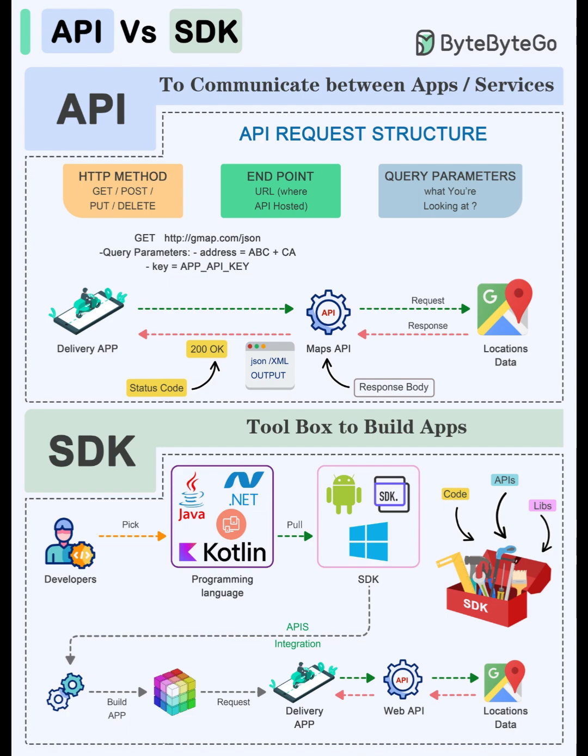Maps use case: with the API, send GET /geocode?address=221B Baker Street&key=... and parse the JSON. With the SDK, call client.geocode(address) and receive a typed object, plus built-in retries and logging. Same capability, different developer experience.